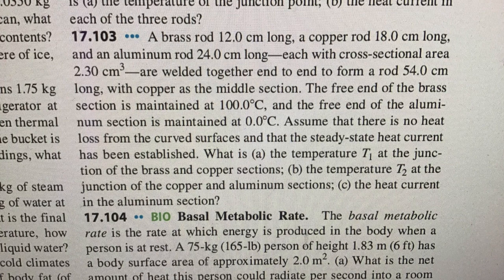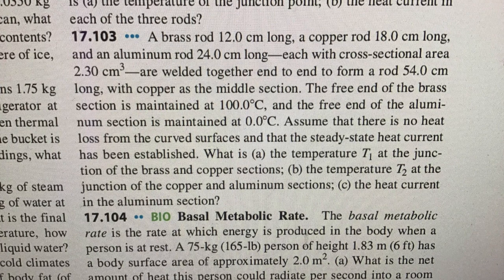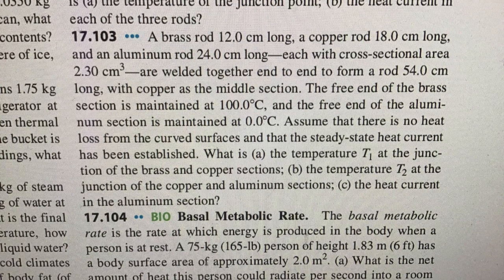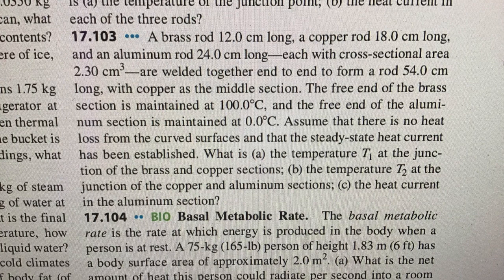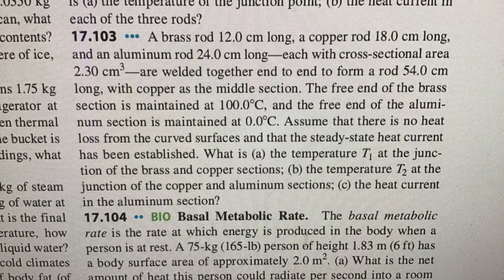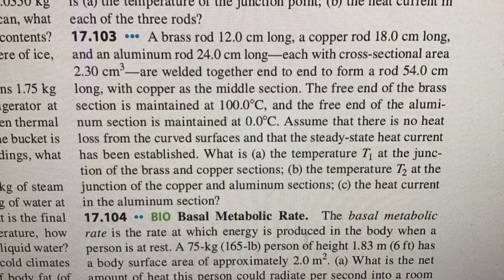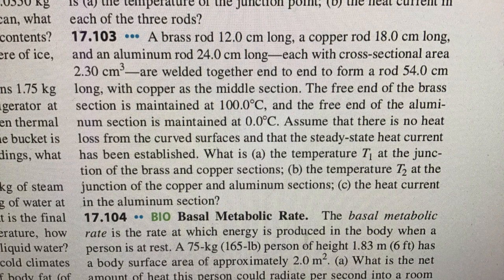We've got a brass, a copper, and an aluminum rod welded together, each with cross-section 2.3 cm squared, to form a 54 cm long rod with the copper in the middle. The free end of the brass is at 100 celsius and the free end of the aluminum is at zero. There's no heat loss to the curved surfaces and the steady state heat current is established.